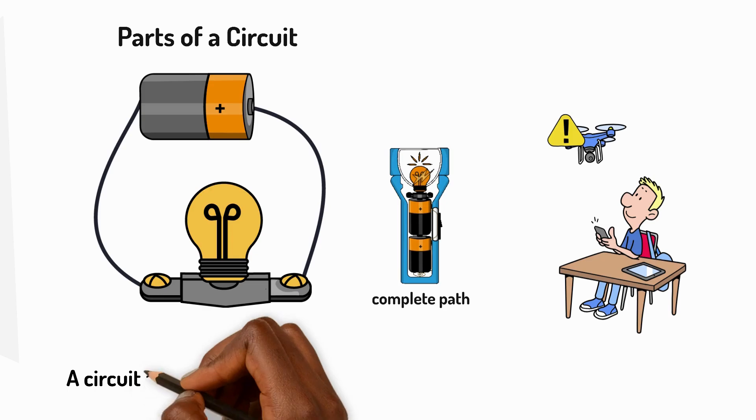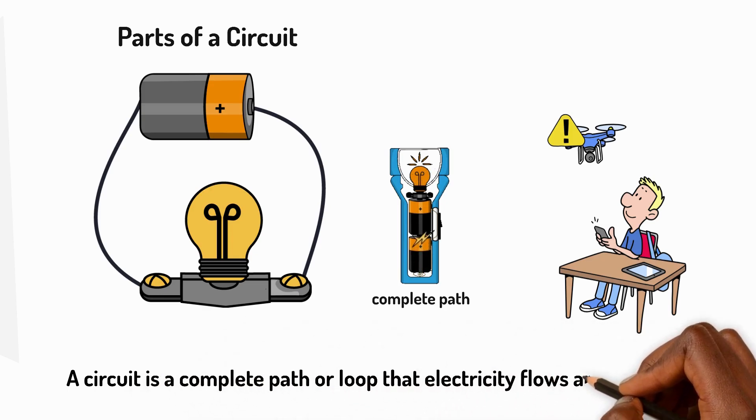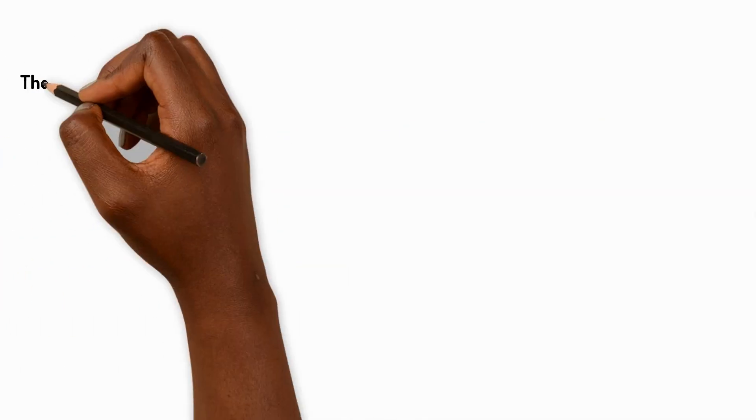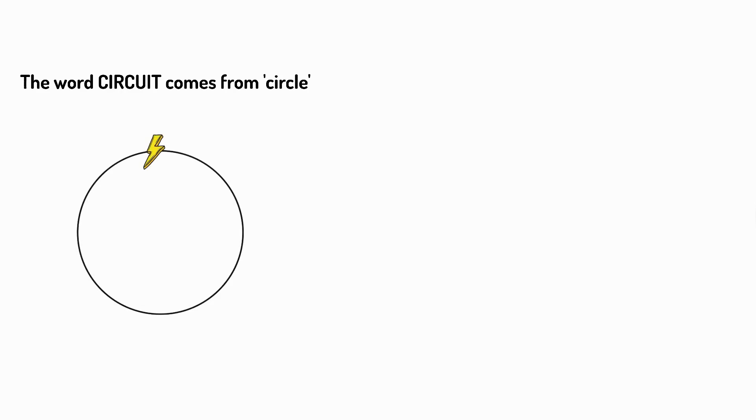A circuit is a complete path or loop that electricity flows around. The word circuit comes from circle. Electricity needs to travel in a complete circle to work properly.